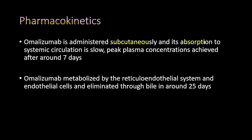Regarding pharmacokinetics, omalizumab is available as a subcutaneous injection only. Once injected subcutaneously, its absorption into systemic circulation is slow, and peak plasma concentration is achieved after around seven days. It is metabolized by the reticuloendothelial system and endothelial cells, and eliminated through bile in around 25 days.